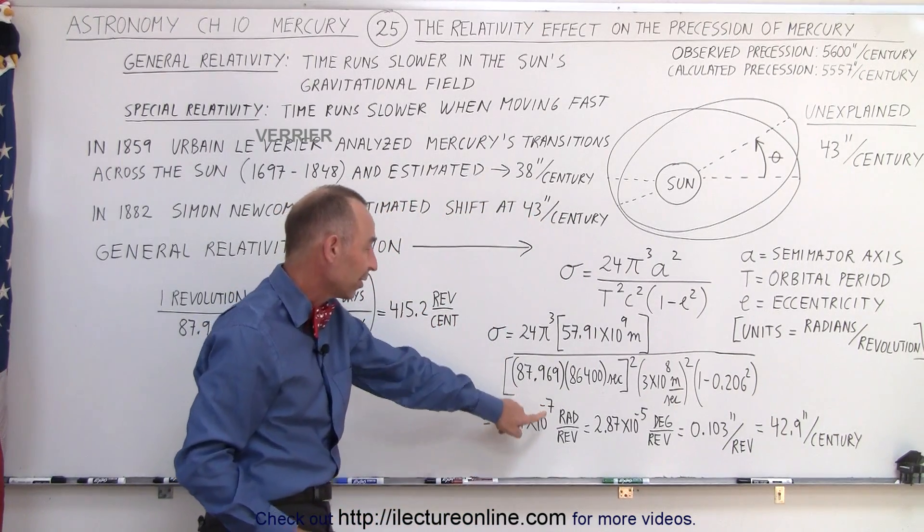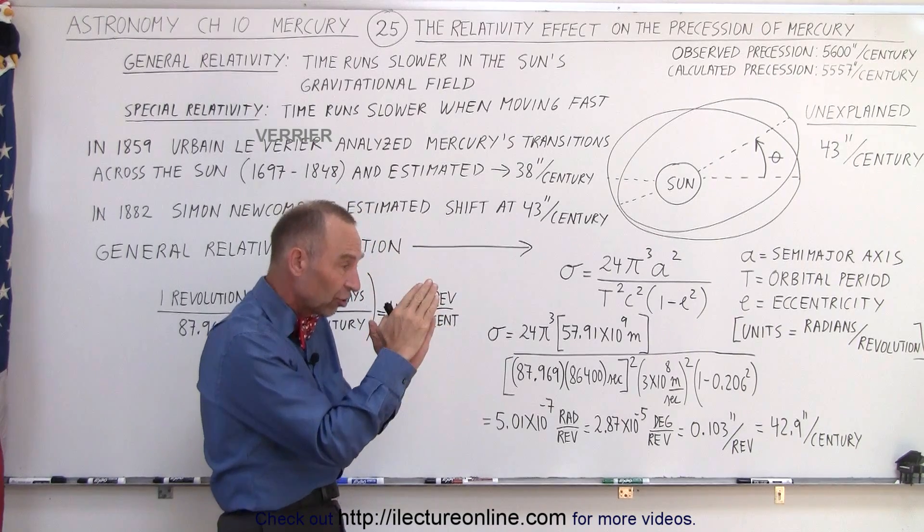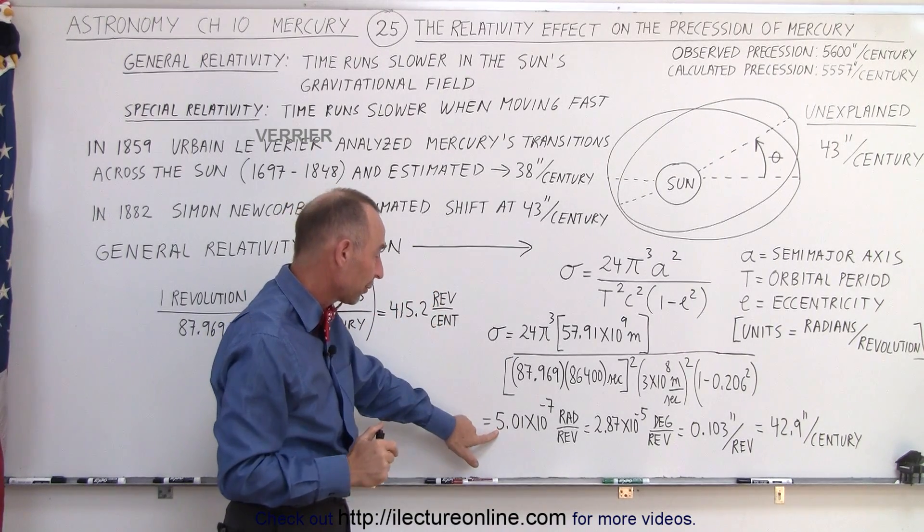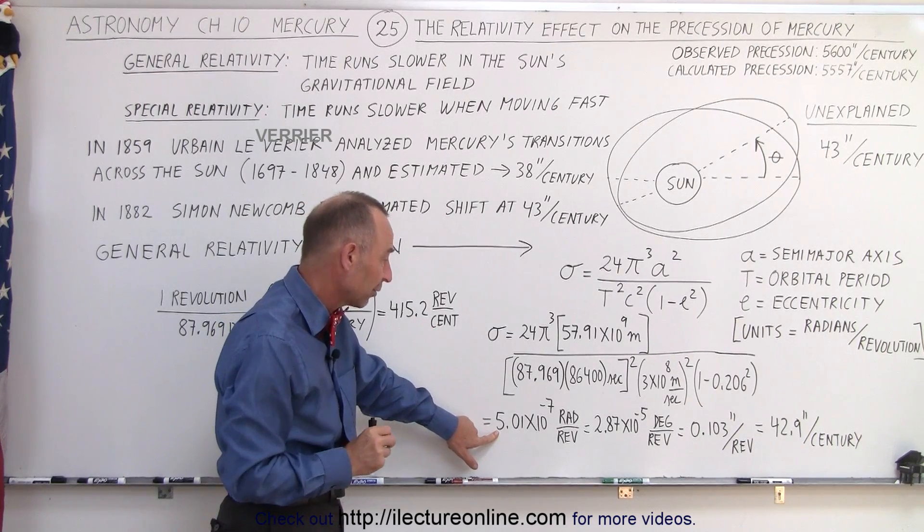Turns out that is 5 times 10 to the minus 7 radians per revolution. So every revolution there's a slight shift in the orbit of Mercury due to the theories of relativity, the effects of the theories of relativity.